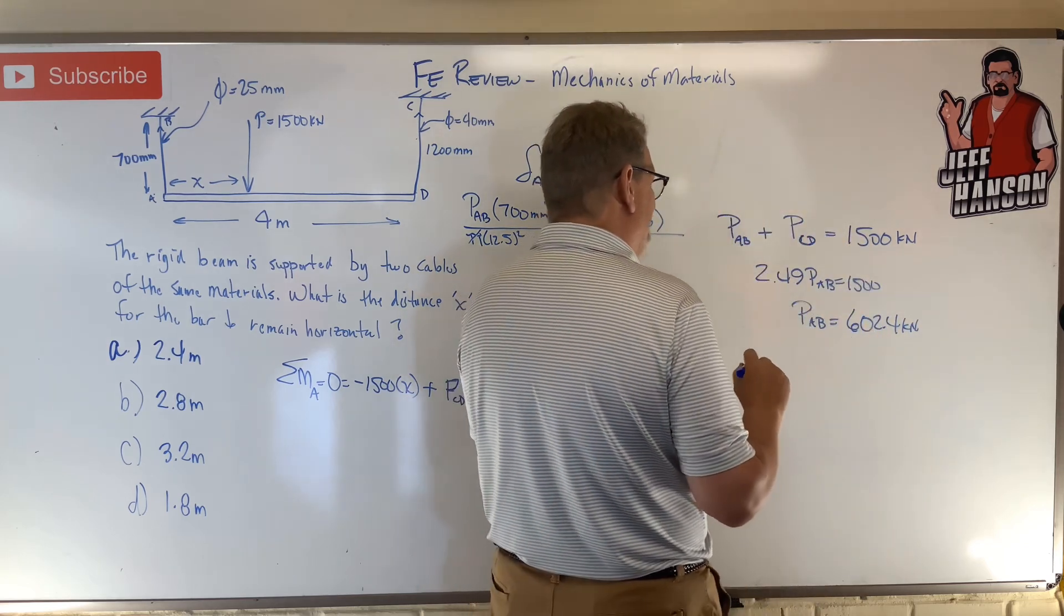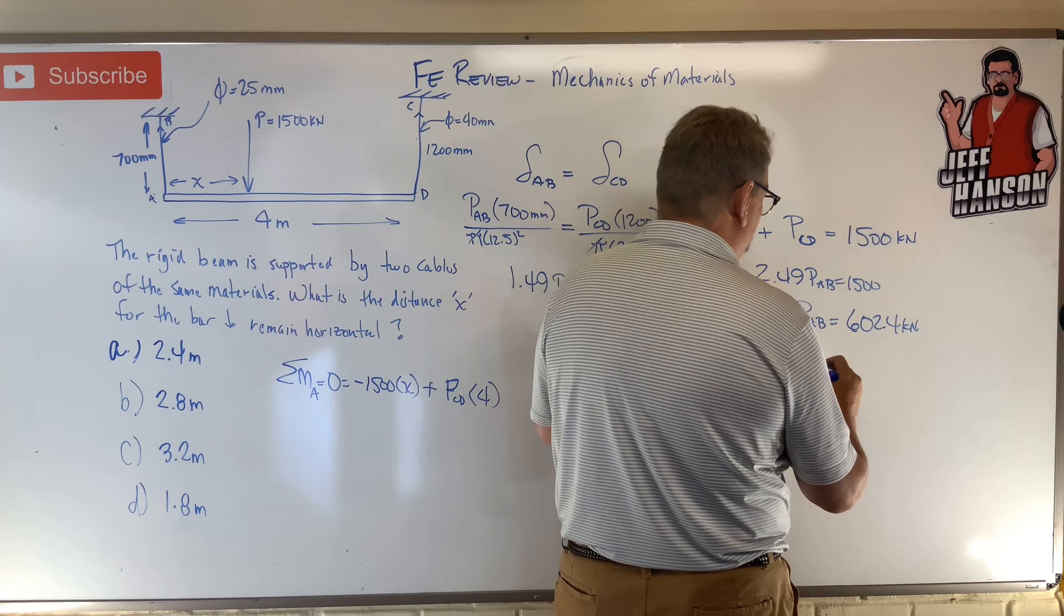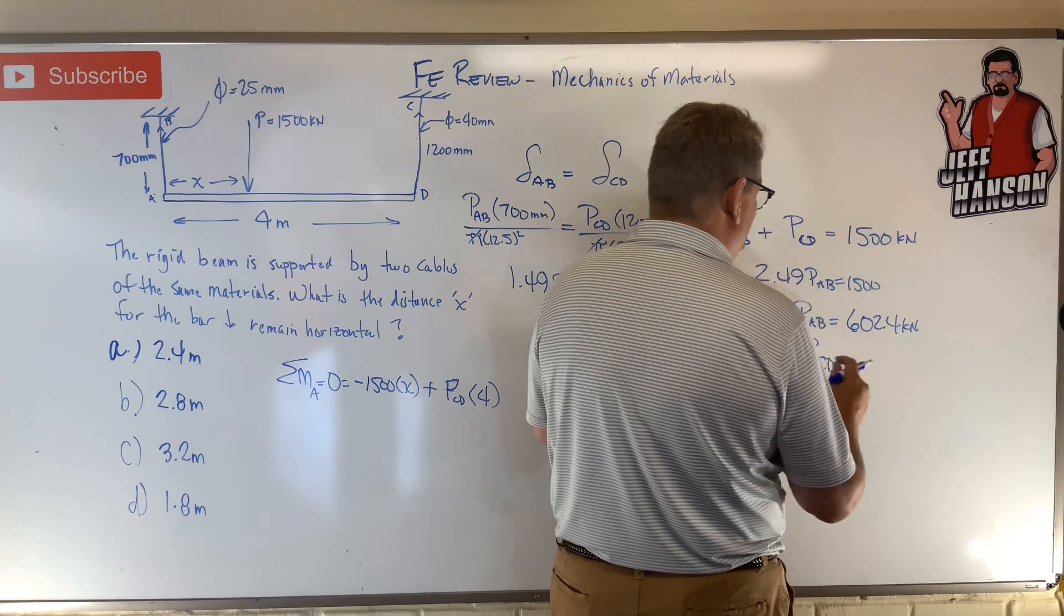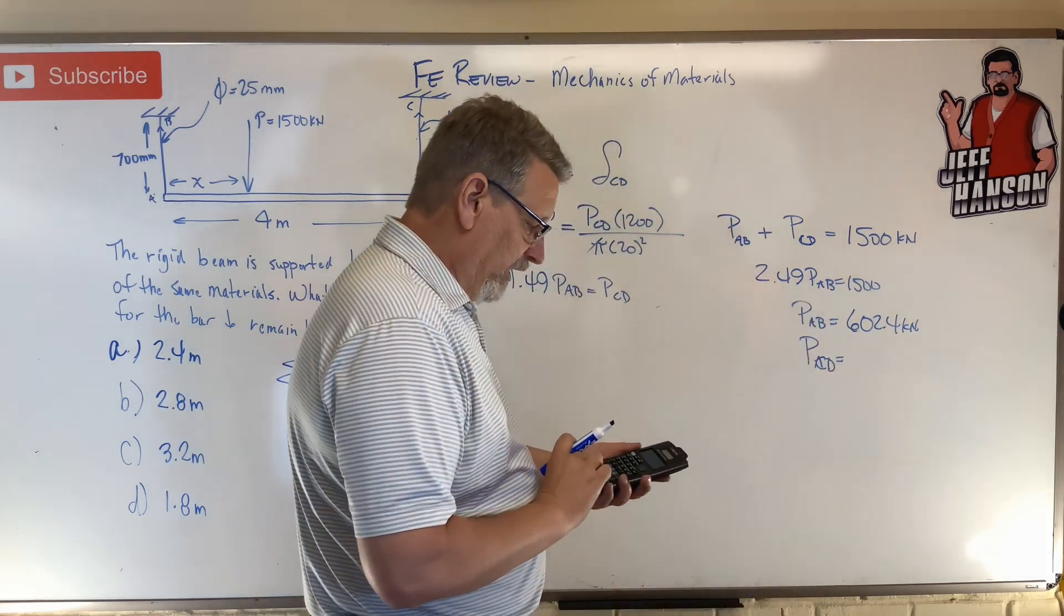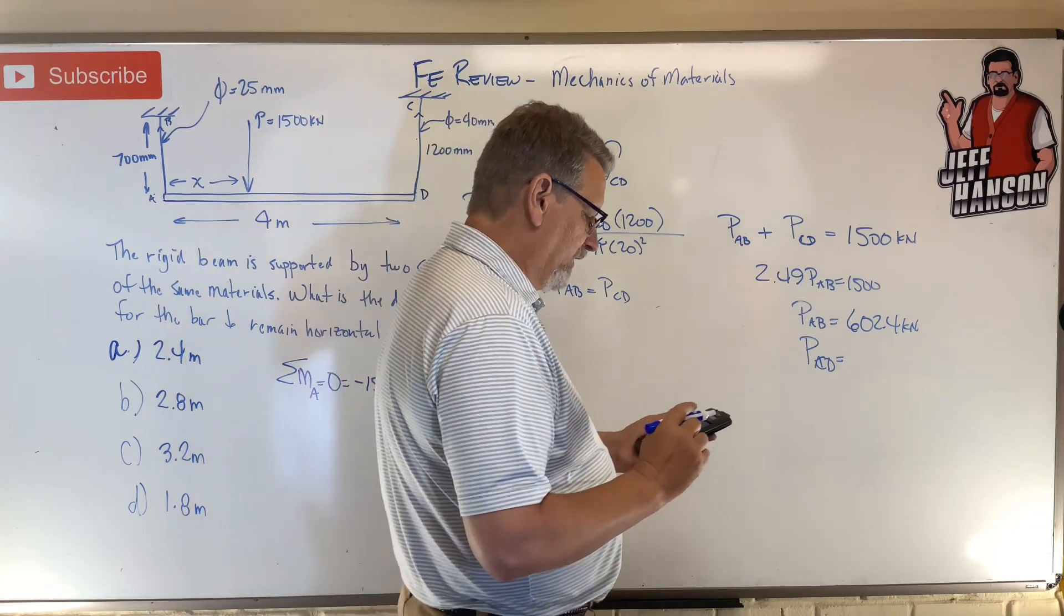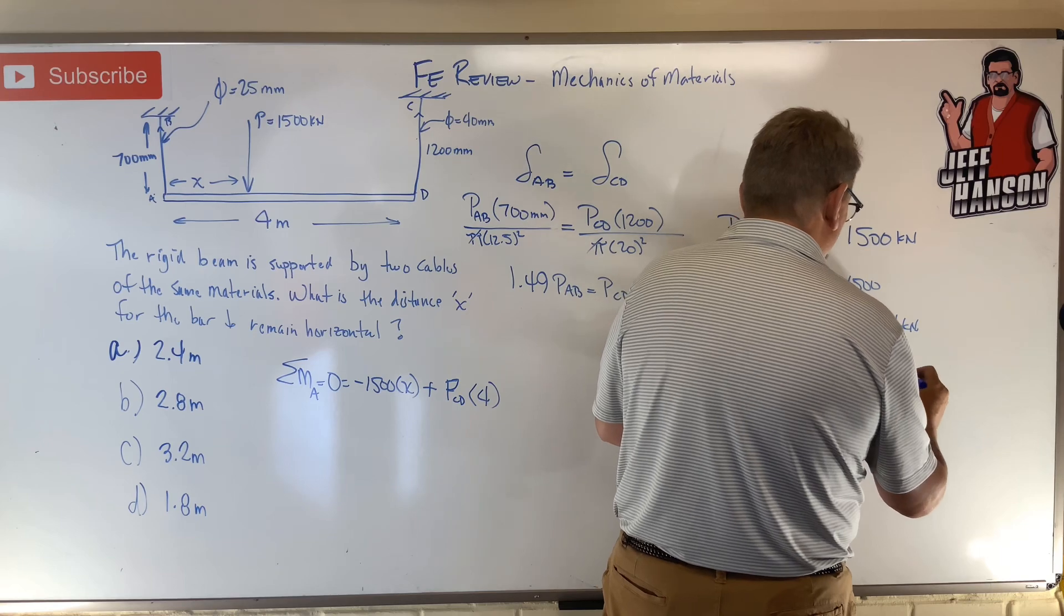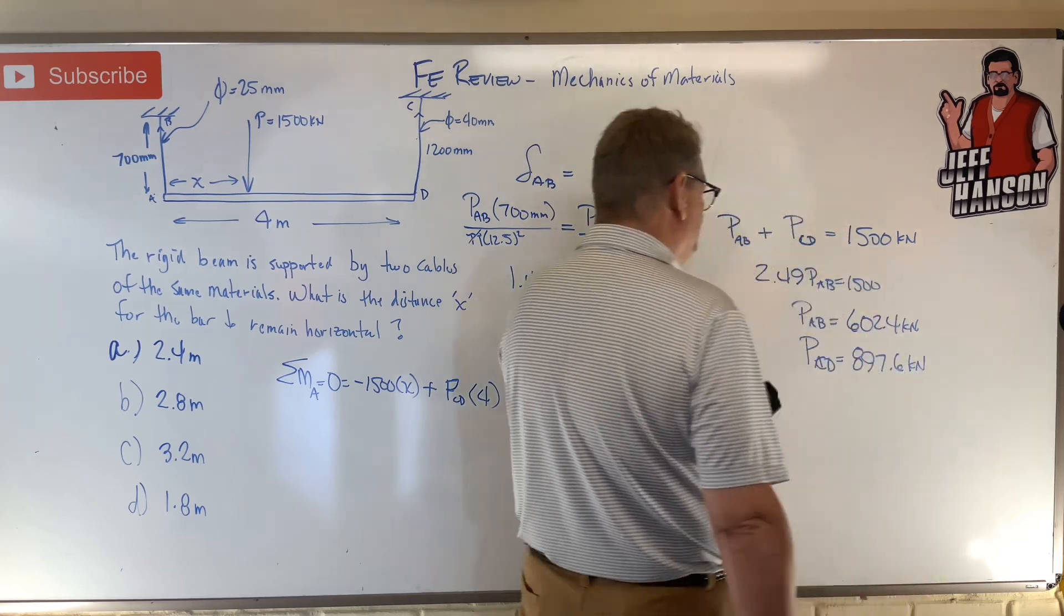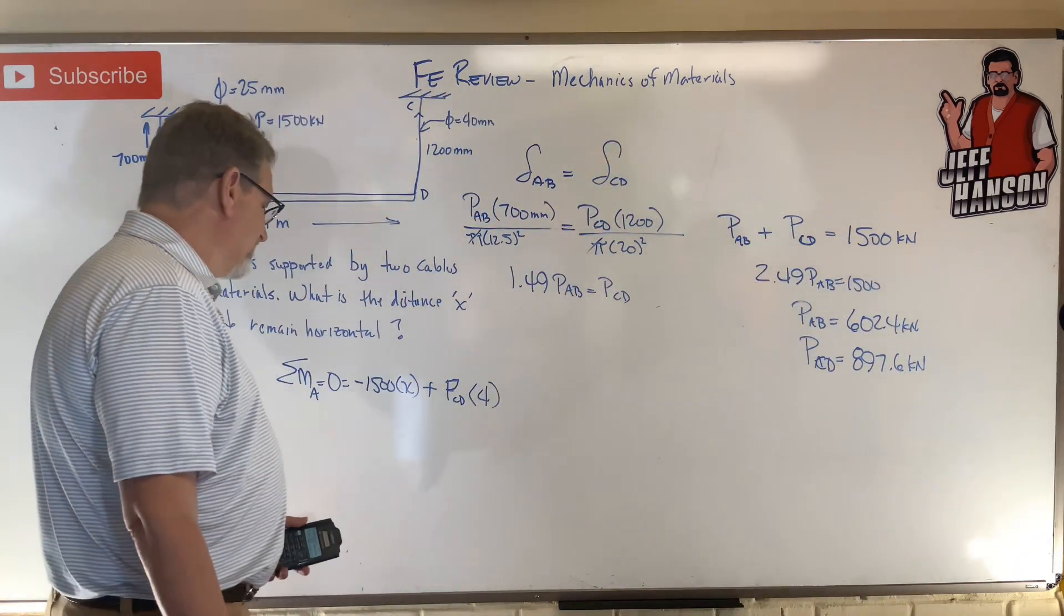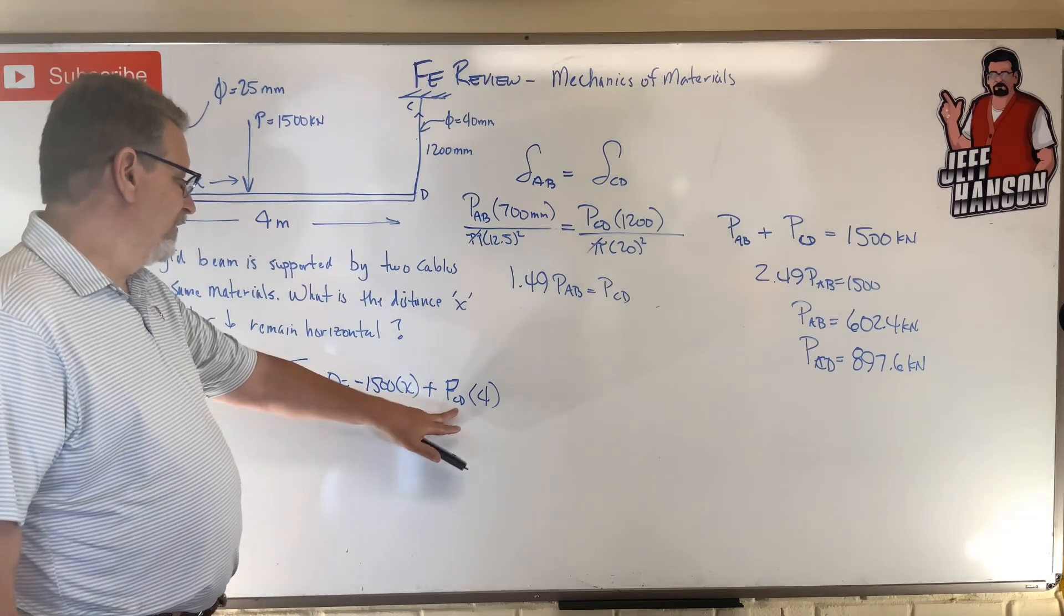So what must the force in cable P_CD be? 1500 minus answer equals 897.6. Now I've got the forces in those cables.